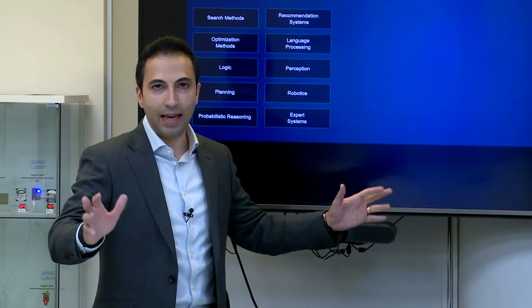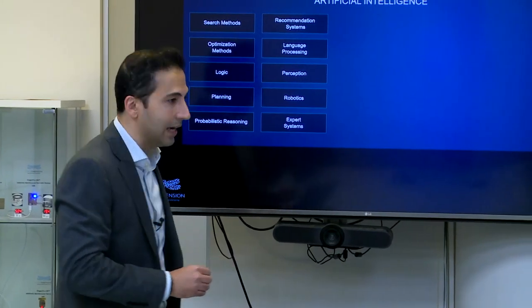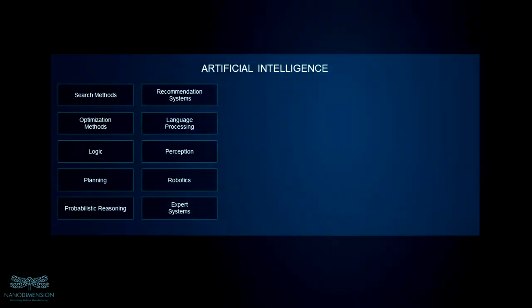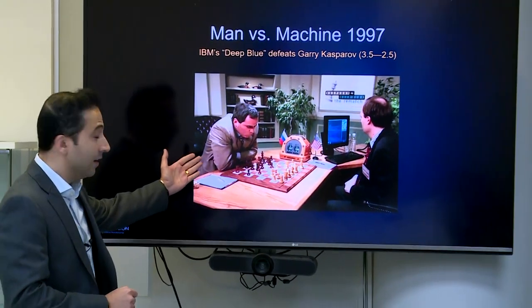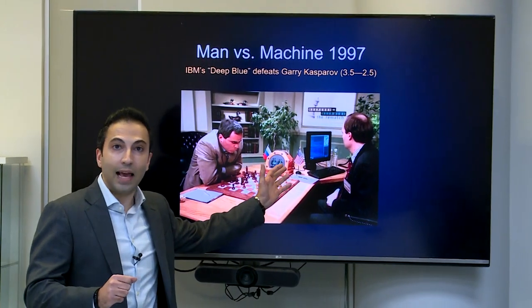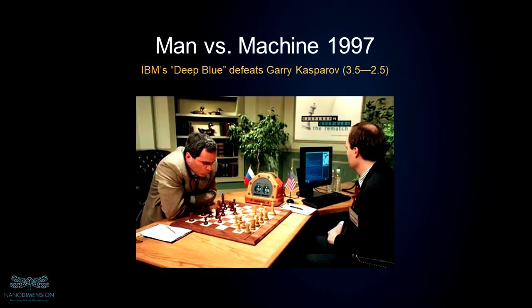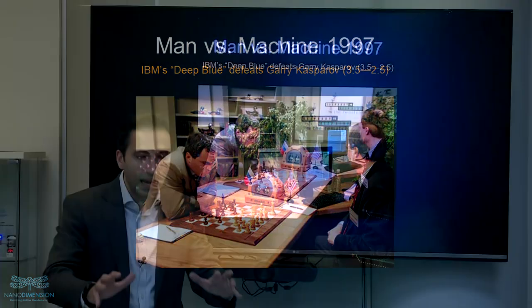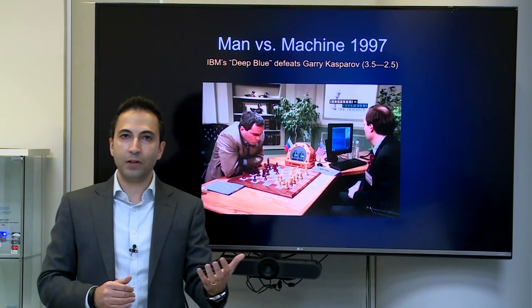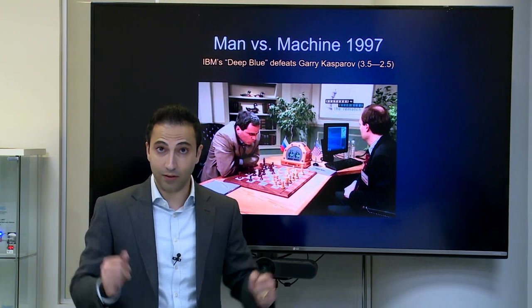Everyone speaks of AI. Every company claims they're doing AI. But actually, AI is a broad umbrella term. Anything that exhibits any kind of intelligence is artificial intelligence. For example, IBM's Deep Blue that defeated Garry Kasparov in chess in 1997 was just a giant chess calculator — no learning capabilities — but it was artificial intelligence. Today, when we say advanced AI, we refer to autonomous learning capabilities.